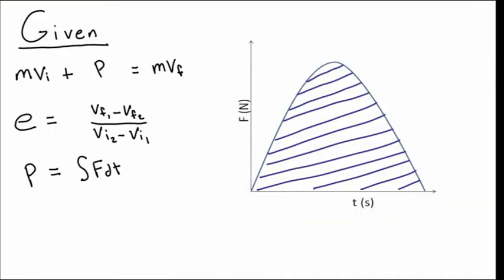So here we have the three equations we will be using and the graph of our force versus expected time. Our first equation comes from our linear momentum equation, which is just our initial momentum of the ball plus the impulse equal to our final momentum of the ball. We have our coefficient of restitution, which is equal to the final velocity of the first object minus the final velocity of the second object over the initial velocity of the second object minus the initial velocity of the first object.